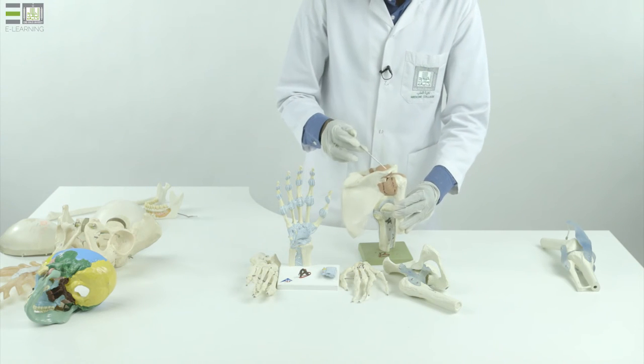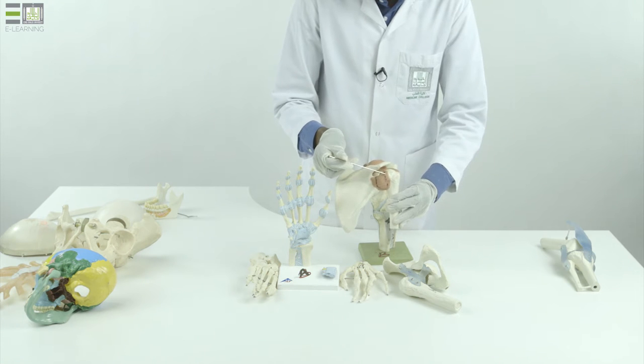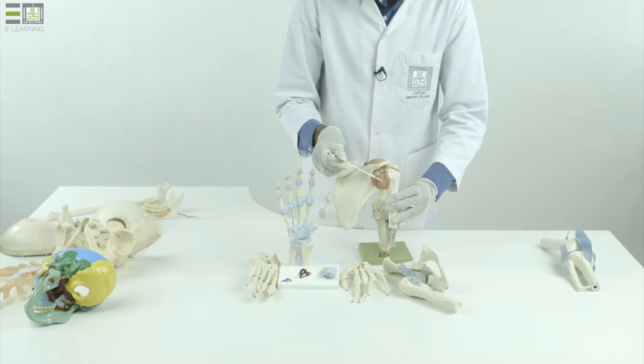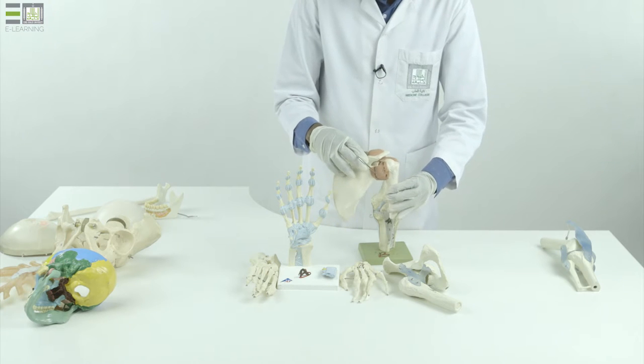The third type of joint is synovial joints, which represent most of the joints between the bones of our skeleton. There is freedom of movement in these joints.